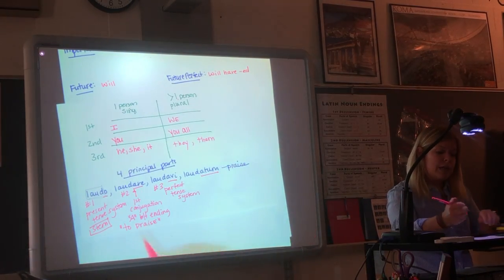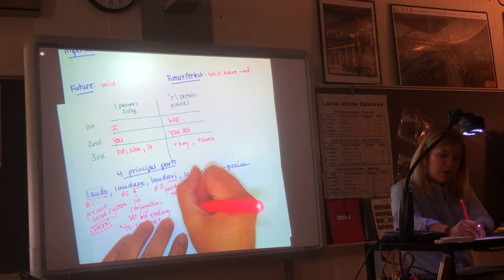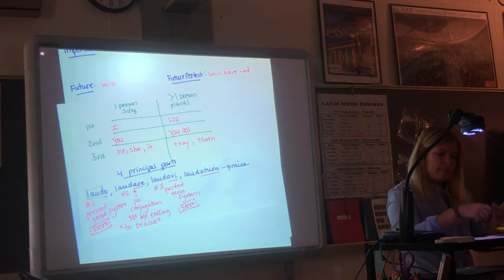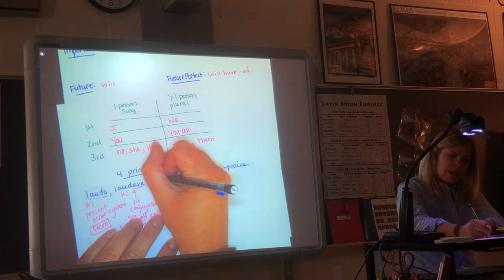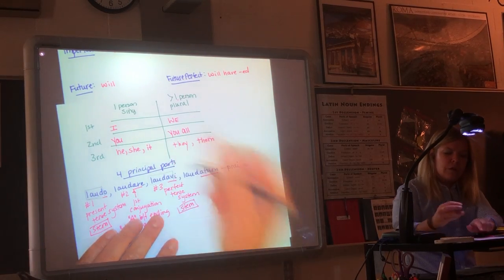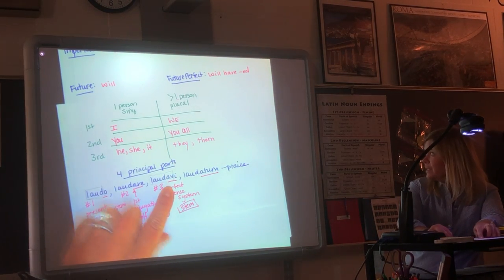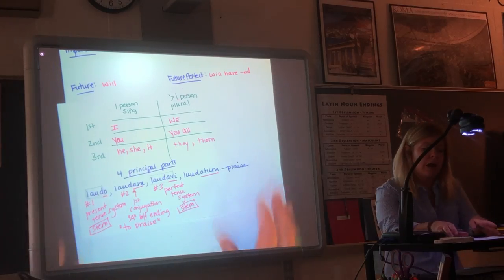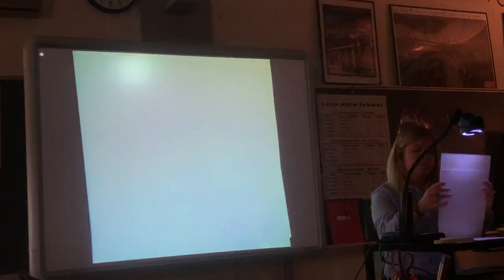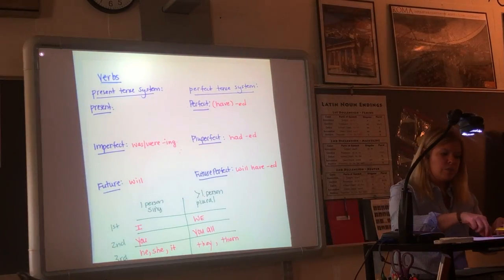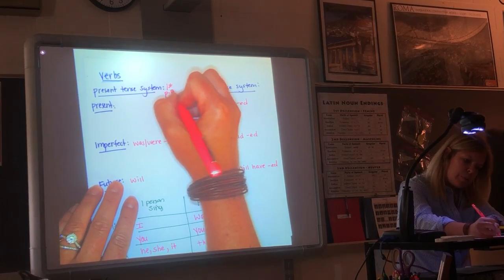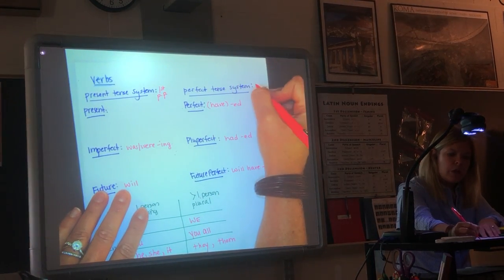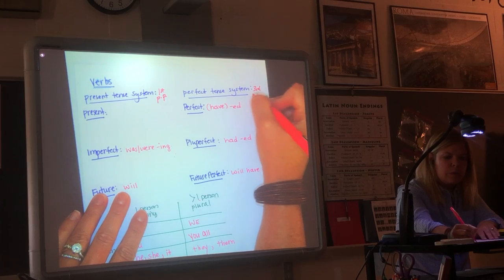The third principal part is used for the perfect tense system, just right here on this side. So first principal part, third principal part. And you find the stem by using this third principal part. So all of your endings need to be attached to that stem, everything before the I.